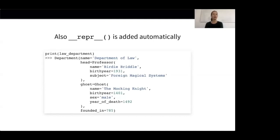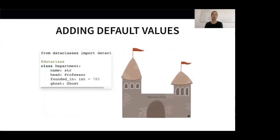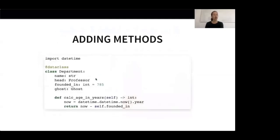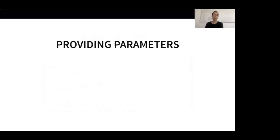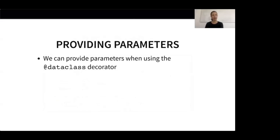We can easily add default values to the fields of our department data class — for example, we could add a default value for the field founded_in. Although data classes typically mostly store values, a data class is still a regular class, so we can freely add methods to it. If you remember the datetime library from our to-string conversion section, we could use it here to calculate the current age of a department in years. So far we have used the @dataclass decorator without any parameters, which corresponds to using the default values. We can, however, provide parameters when creating a new data class — for example the init and repr parameters are true by default, and when setting them to false, no __init__ or __repr__ methods would be created automatically.